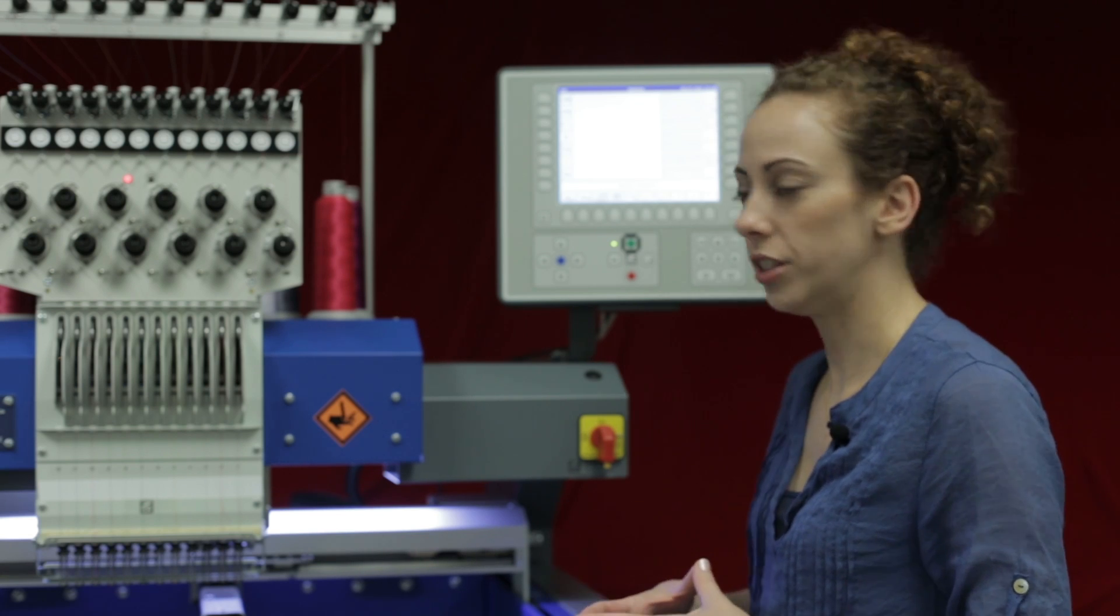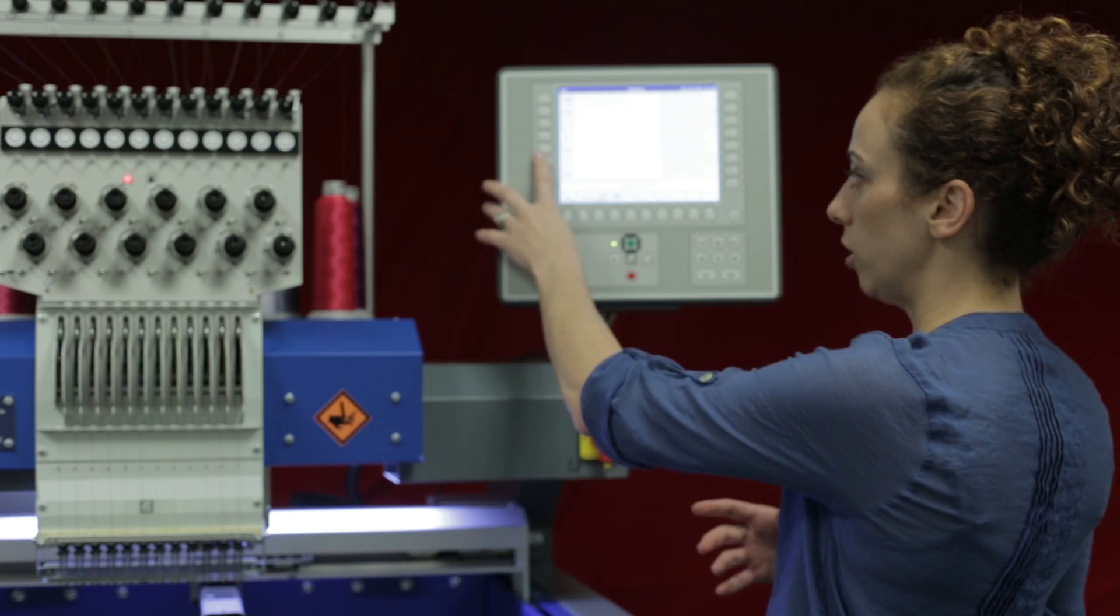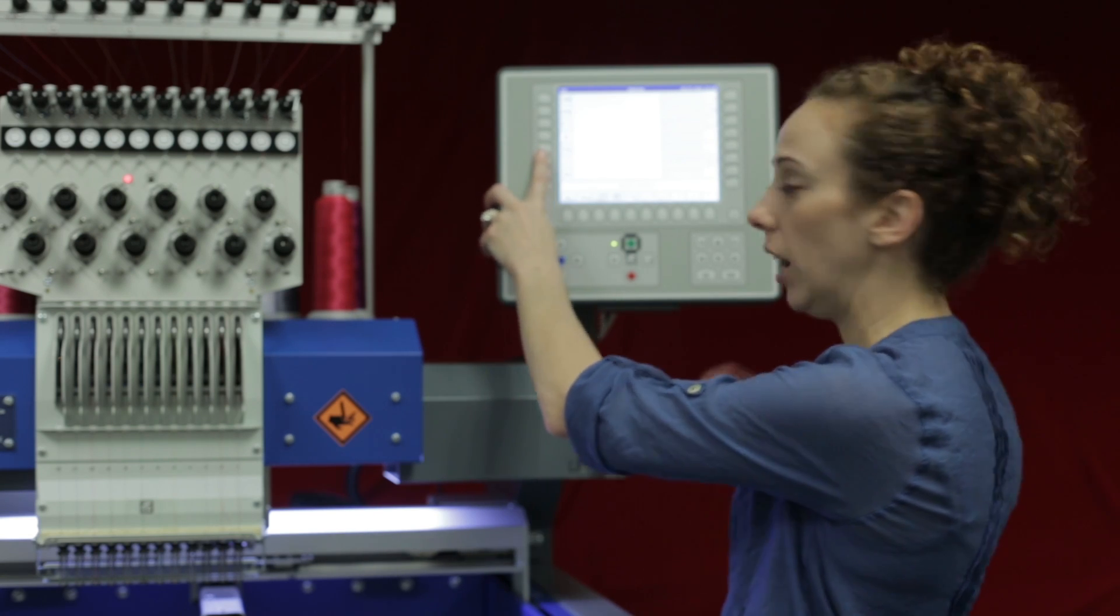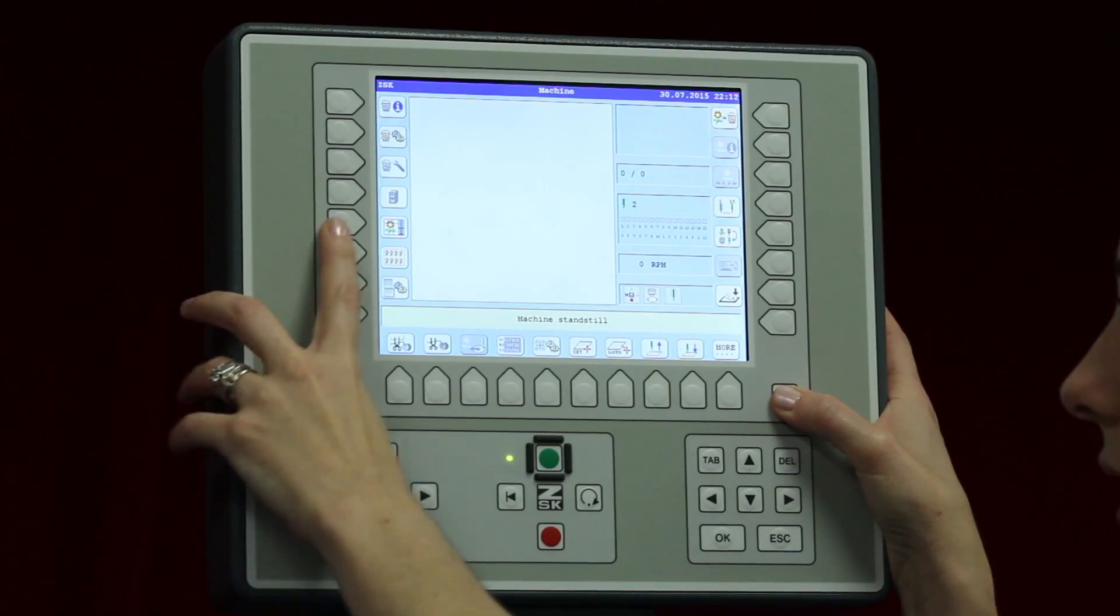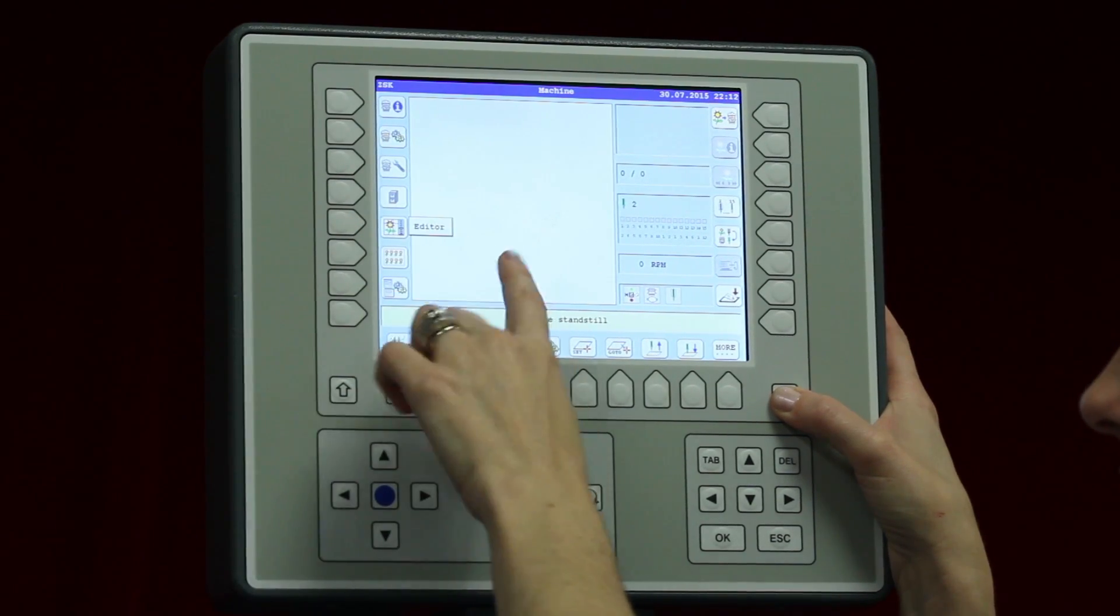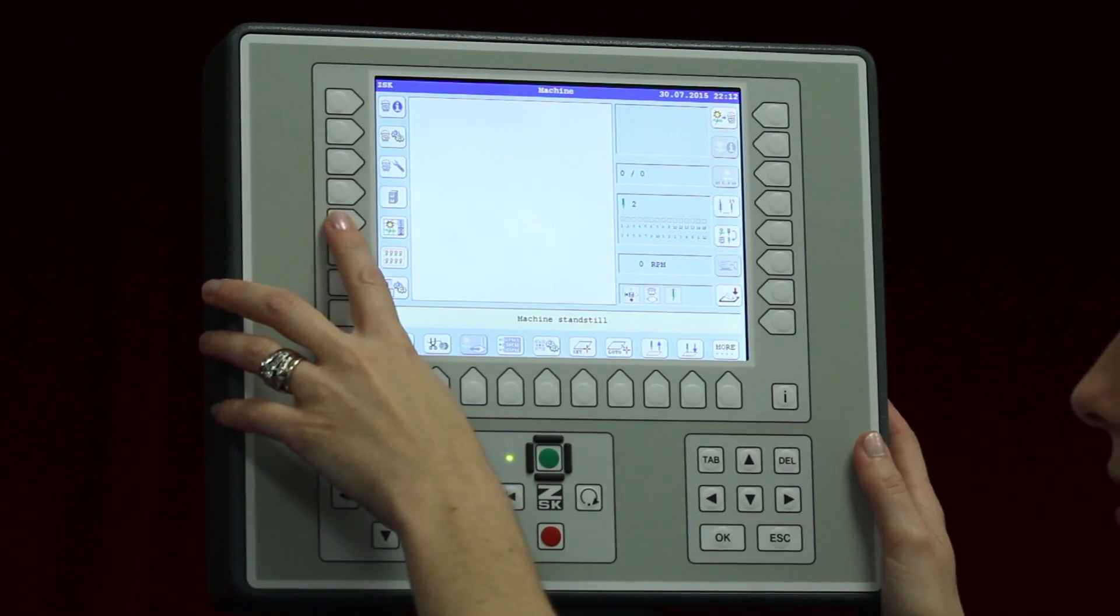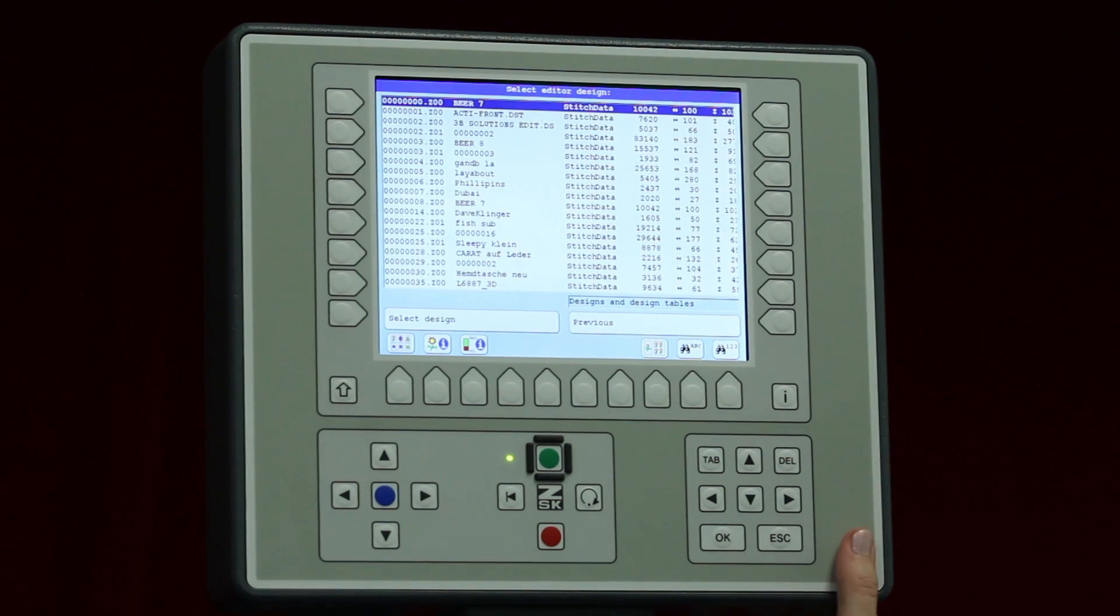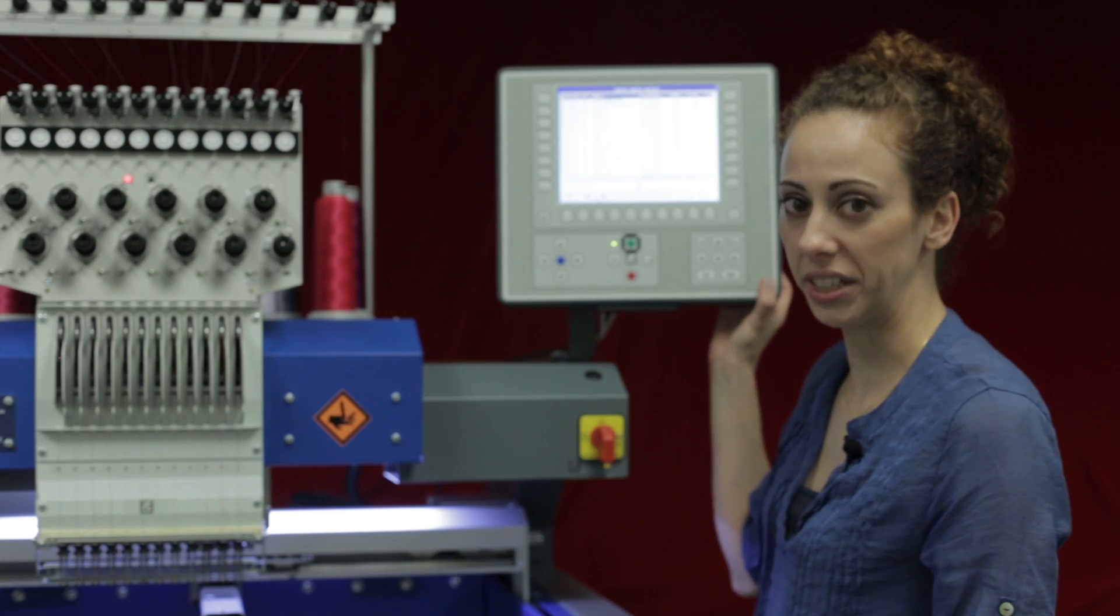In order to get to the editor on the T8 controller we would go to the editor function which is L5. So I will hit I and L5 and you can see it says editor. So we simply press editor and now we can go in and choose the design that we would like to edit.